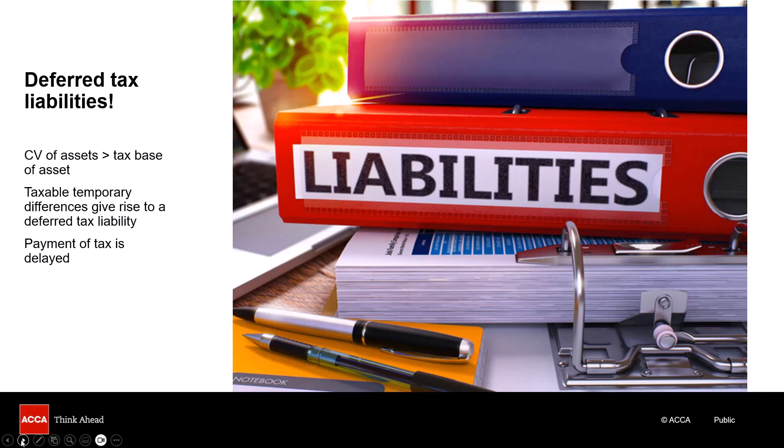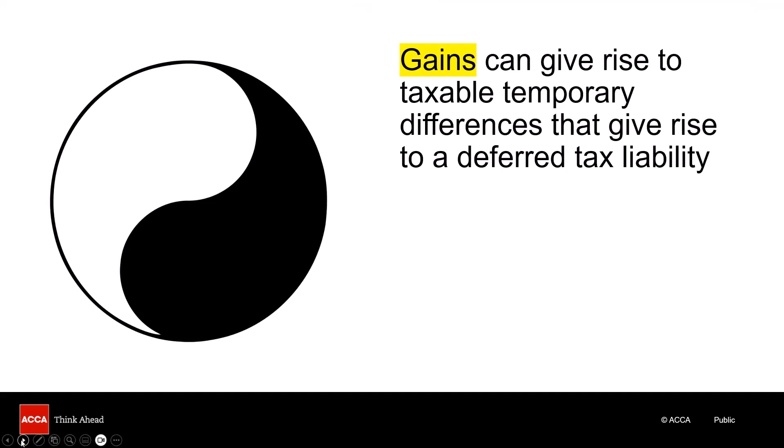How prudent is that? To recap: gains give rise to taxable temporary differences that give rise to a deferred taxation liability. These three phrases are linked — gains, taxable, liability — like 2, 4, and 6, they are all even numbers. The gains have taxable temporary differences that give rise to a deferred tax liability.